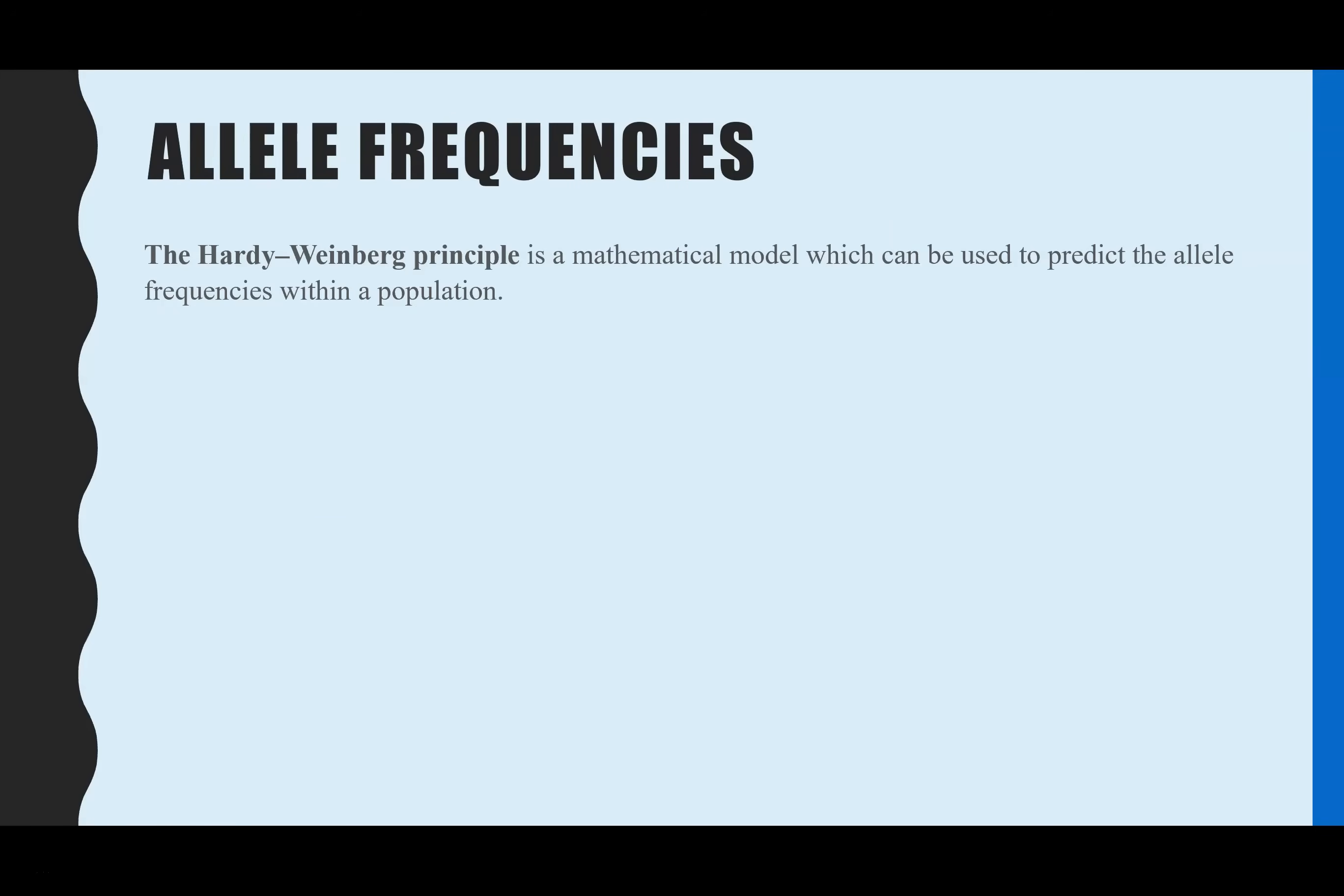Before we look at the maths part, you need to remind yourself of three key words to really understand what we mean by the Hardy Weinberg principle. This mathematical model is used to predict the allele frequencies within a population. There are three key terms that we need to recap: gene pool, population, and allele frequency.